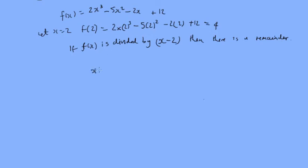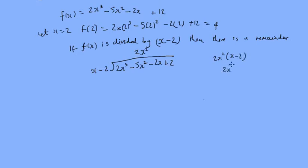So let's do it. Let's take x minus 2 and divide it into 2x cubed minus 5x squared minus 2x plus 12. First we will want to get rid of the 2x cubed, so we'll do 2x squared first. 2x squared multiplied by x minus 2 is going to give us 2x cubed minus 4x squared. So we'll put that here: 2x cubed minus 4x squared. And we're subtracting that, so that's going to be 0. Minus 5x squared minus negative 4x squared is going to give us minus x squared.